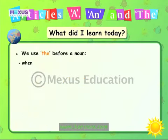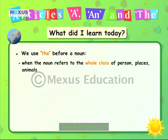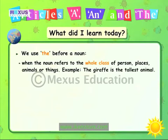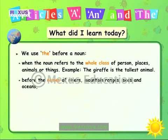We use 'the' when the noun refers to the whole class of persons, places, animals or things — for example, 'the giraffe is the tallest animal'. We also use 'the' before the names of rivers, mountain ranges, seas and oceans, famous buildings, and holy books — for example, the Himalayas.